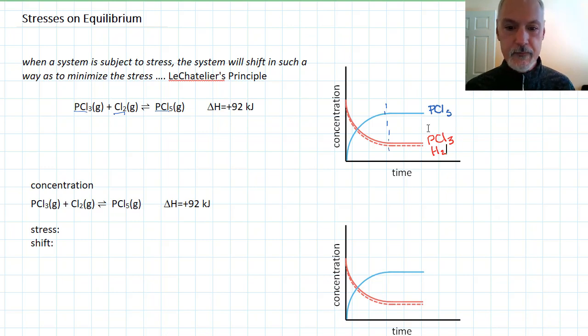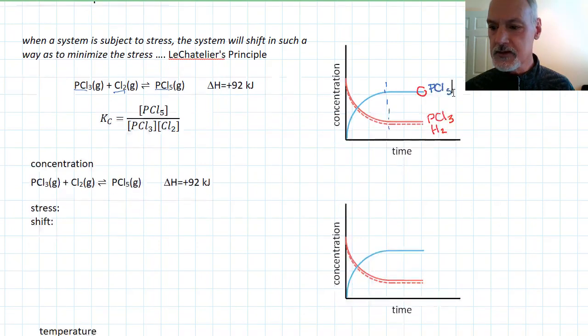At equilibrium, I can say the following. From the last program, we've reached equilibrium. So this ratio equals a particular constant. Now, let's look at introducing a stress. So what we're going to do is at this point here, we're going to introduce something into our system. So let's take a look at our first stress.